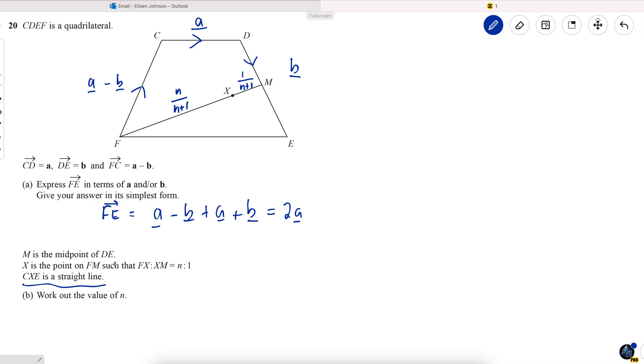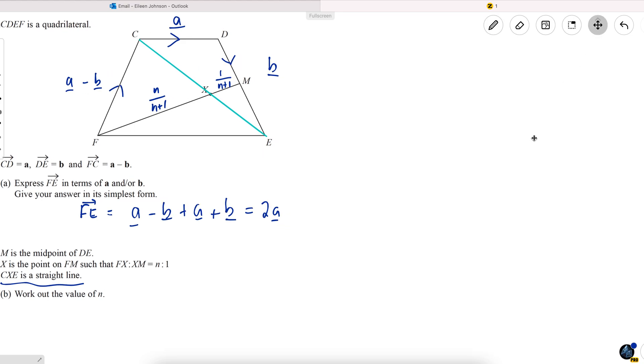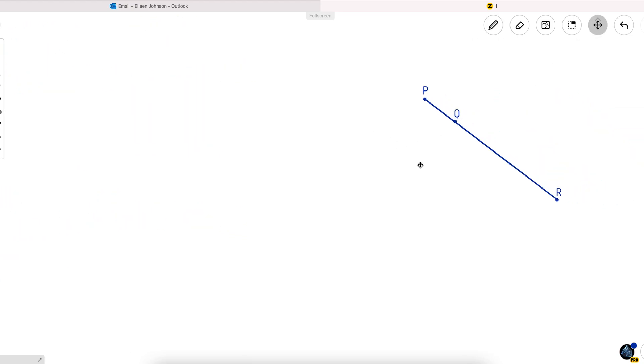So this is a really important piece of information when it comes to trying to work out the value of N. I'm going to mark on that straight line, the diagram there, because it means that any vector, all of these vectors are going in the same direction. So C to X, X to E, and C to E are all heading in the same direction, and I'm going to demonstrate how that works with a more simple diagram over here.